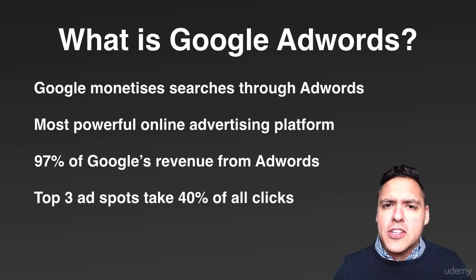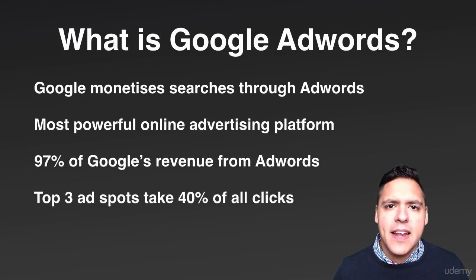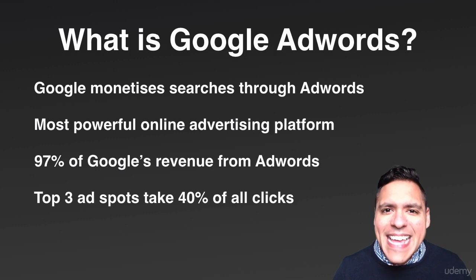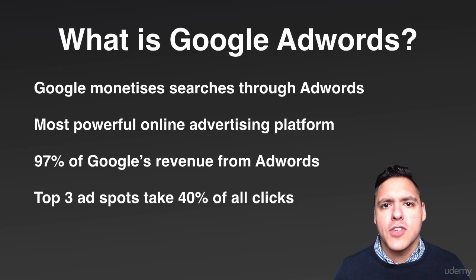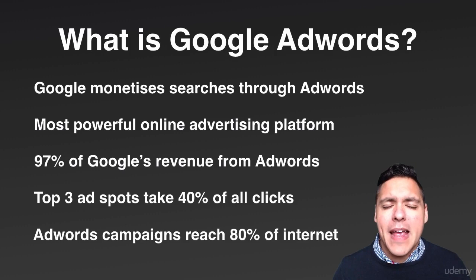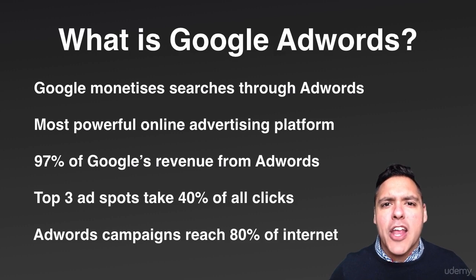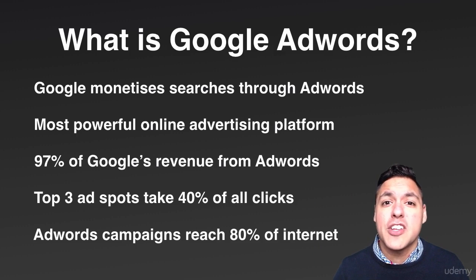Something which is also really vital for you to know is that the top three ad spots on any particular search take 40% of all clicks. So if your product appears on page two, three, or ten, you've got a much smaller chance of ever being seen. Yet if you are in the top results, you have the most potential to be seen. And one of the most groundbreaking statistics is that Google AdWords display campaigns reach 80% of the internet — it's just immense to know that you can be seen virtually anywhere online as a result of having a Google AdWords campaign.